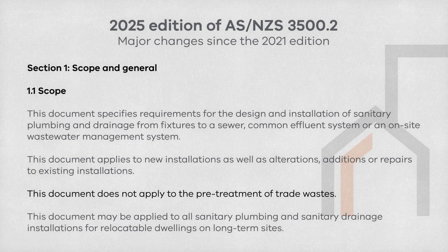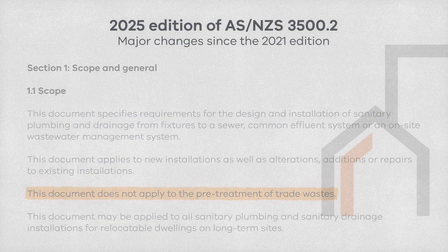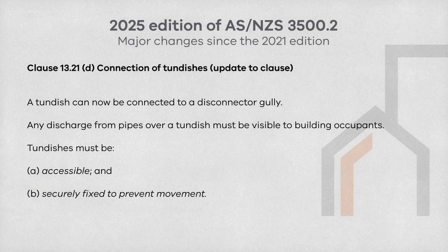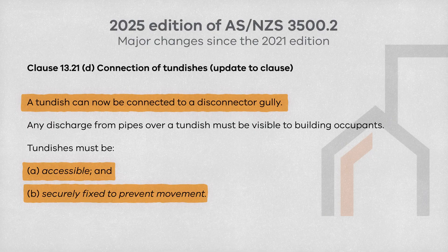Firstly, clause 1.1 has been updated where the informative note from the previous standard has now been incorporated into the 2025 standard. Plumbers should now coordinate with the network utility operator regarding the requirements for pre-treatment of trade wastes. Clause 13.21 has now been updated to allow a tun dish to be connected to a disconnector gully. Tun dishes must also be accessible and securely fixed to prevent movement.